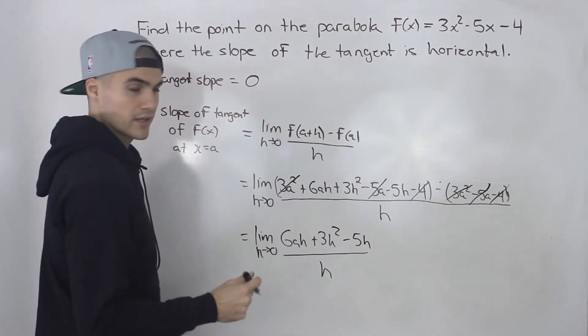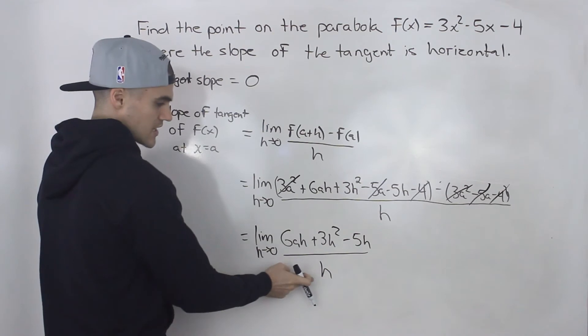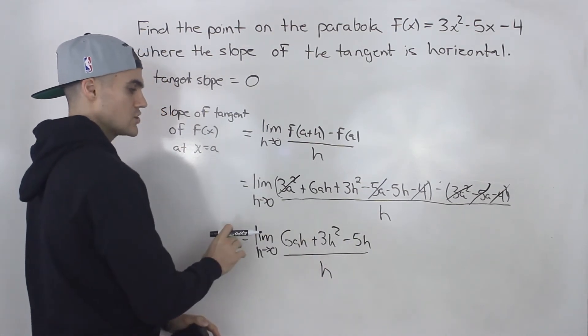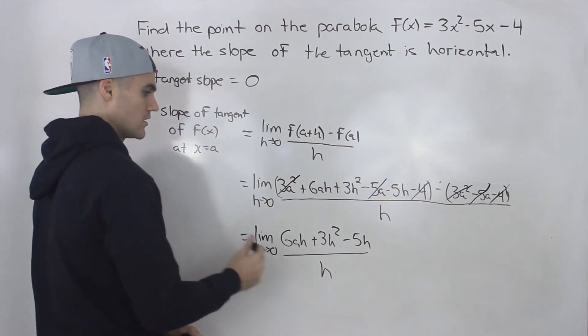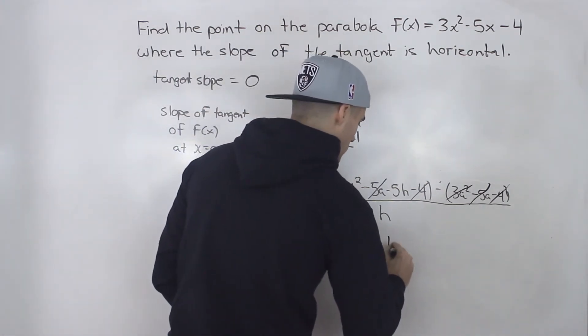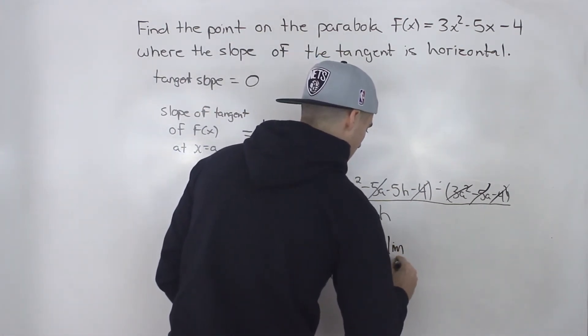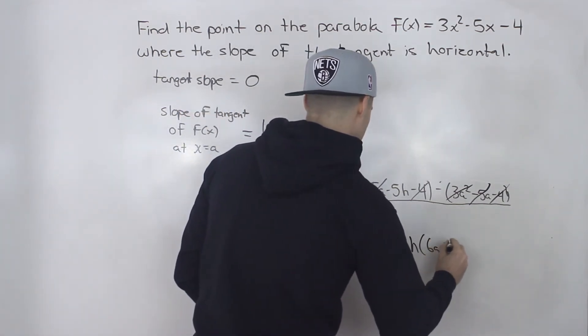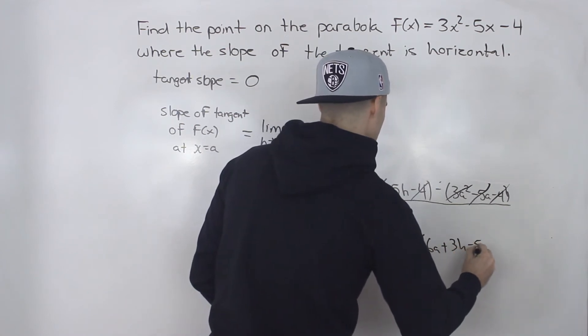Now we still can't plug in an h value of 0 because we still have this h in the denominator, but we can get rid of it by factoring out an h in the numerator.